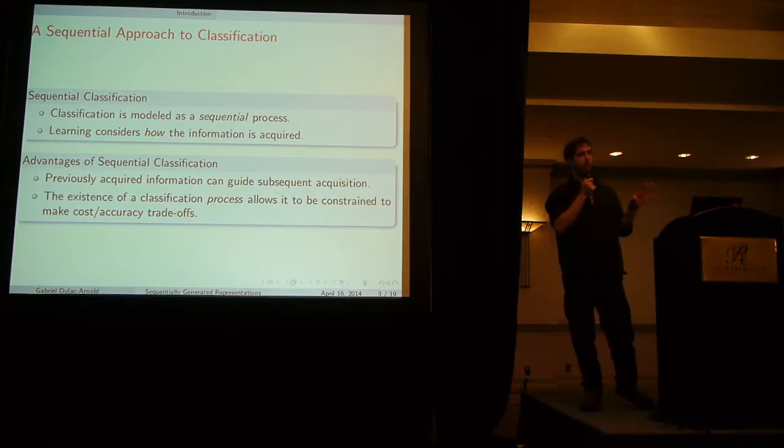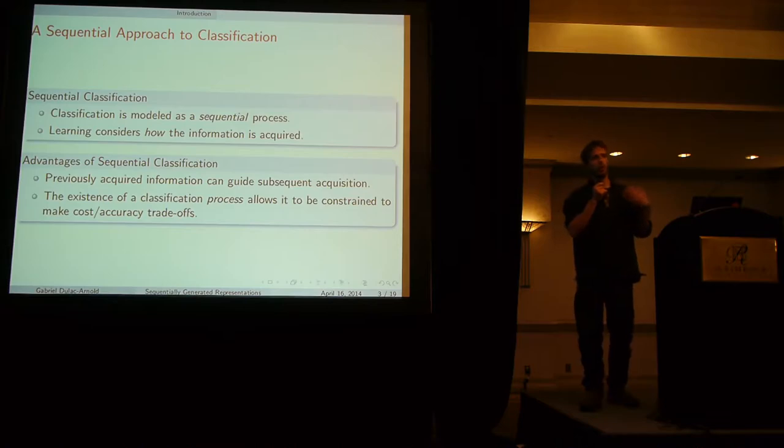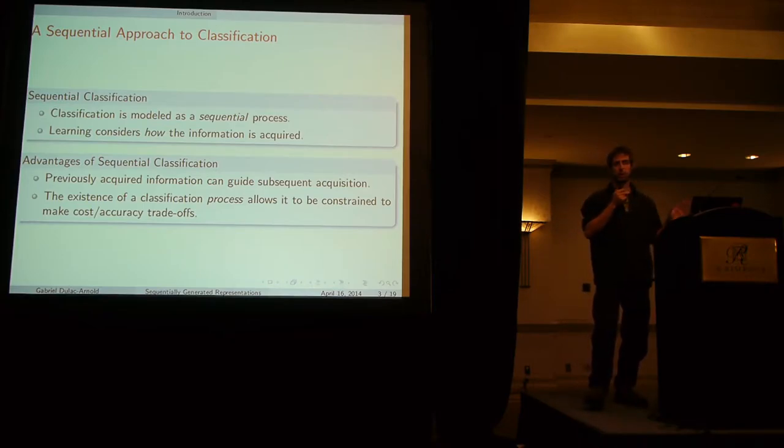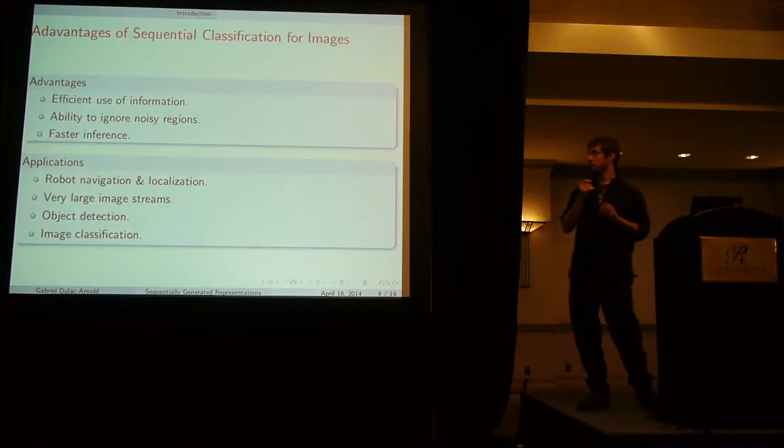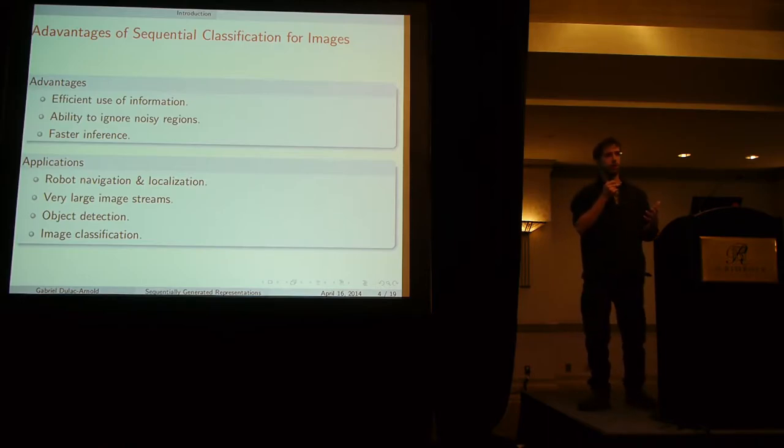Additionally, since this classification process is explicitly existent we can constrain it during tasks to maybe implement some sort of budget or other constraints. In this particular task we actually have a fixed budget and we don't constrain the acquisition at all but it's definitely something that's possible.